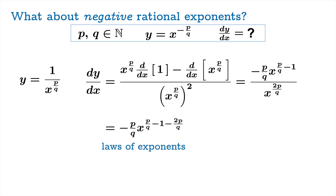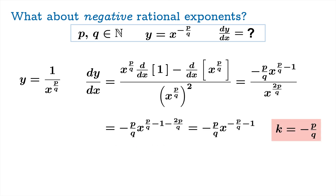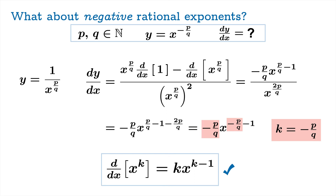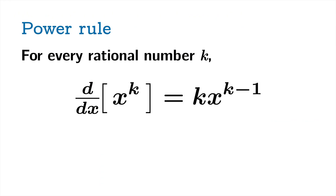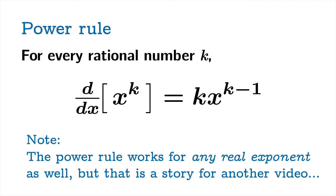Using laws of exponents to combine into a single power, and identifying k as negative p over q, we see the pattern is sustained: the derivative of x to the k equals k times x to the k minus 1. For every rational number k, the power rule holds. In fact, the power rule works for any real exponent as well — that proof will be left for another video. For instance, the derivative of x to the π is π times x to the π minus 1.